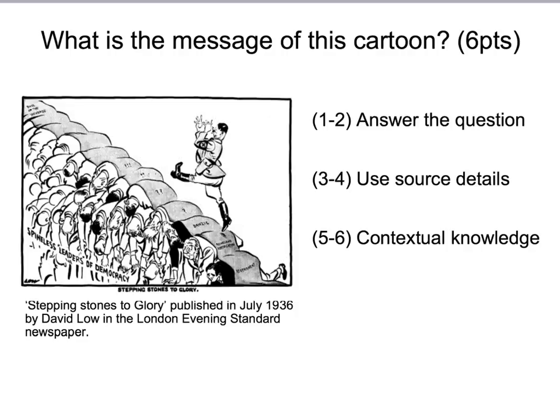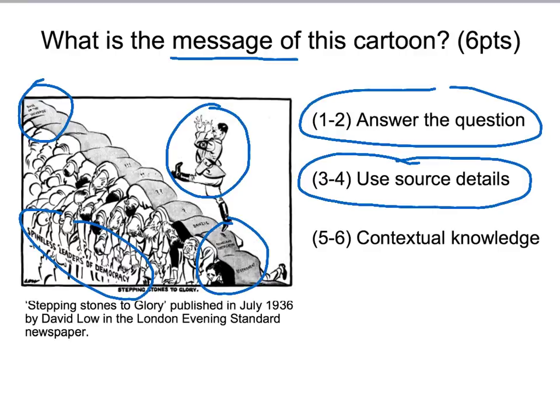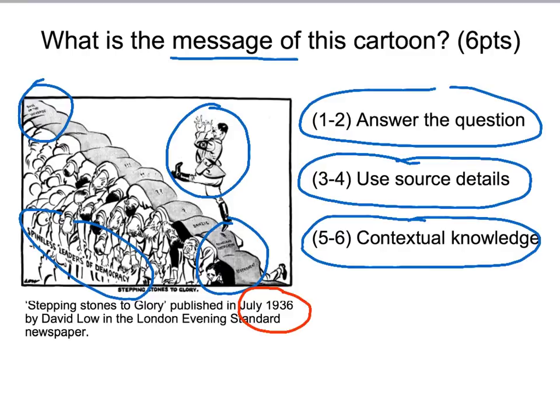Using the mark scheme to answer the question 'What is the message of this cartoon?', you should directly state the message right at the beginning, then use source details to back your answer up — use at least two or three key points from the cartoon. You don't need to use every point, but you must support your answer. Contextual knowledge is absolutely vital for the higher marks: mention that from 1933 onwards Hitler began to rearm Germany against the Treaty of Versailles, and that by 1936 Hitler had marched troops into the Rhineland, while the leaders of Britain and France did nothing to stop him.